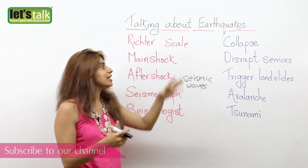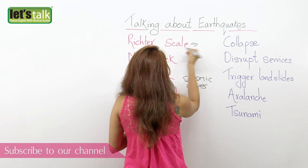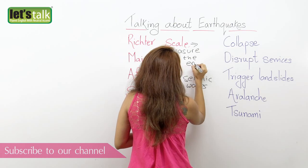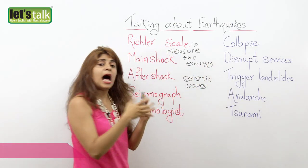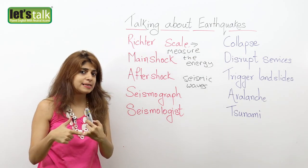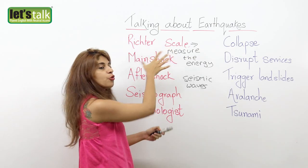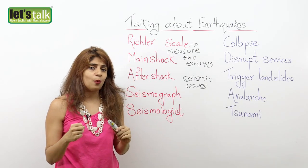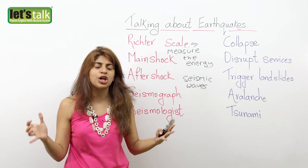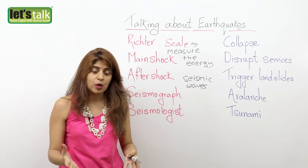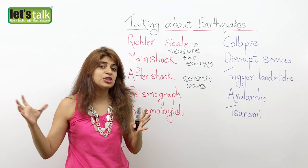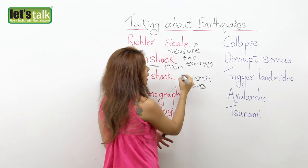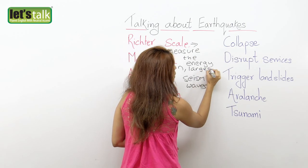That energy is measured on a Richter scale — just like how we measure temperature on a Fahrenheit or Celsius scale, an earthquake is measured on a Richter scale. The next term is main shock. When an earthquake occurs, the largest earthquake in a sequence — the one that destroys everything — is called the main shock. So we'd say the main earthquake or the largest earthquake.